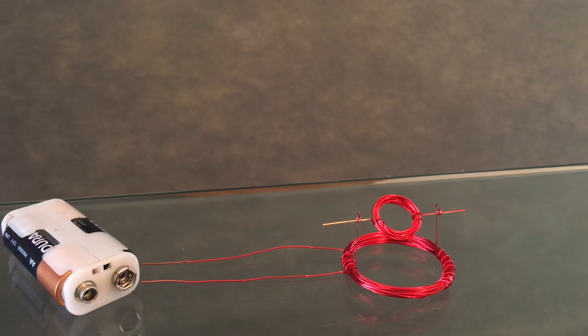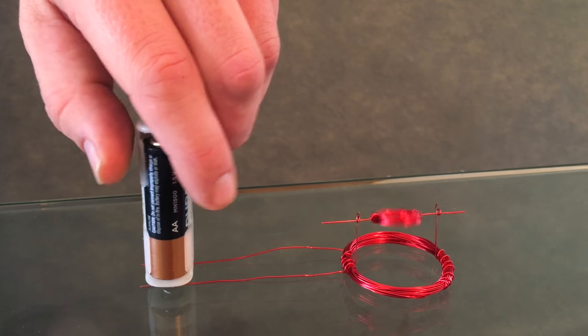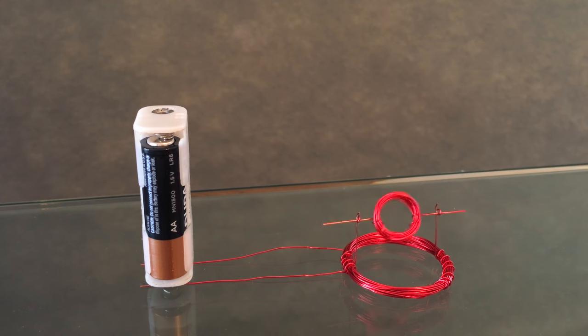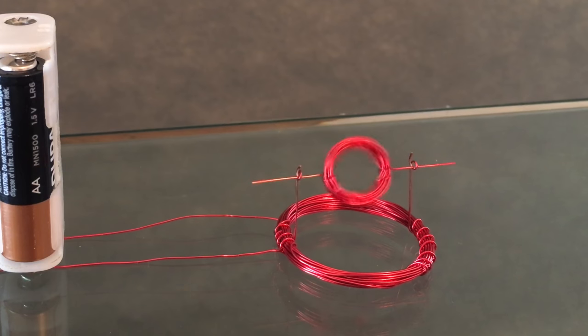At this point, you're done. Congrats. Let's put it all together. Scrape the enamel off the input wires and apply three volts. If it doesn't start automatically, give it a little nudge. You now have a functional motor. So cool.